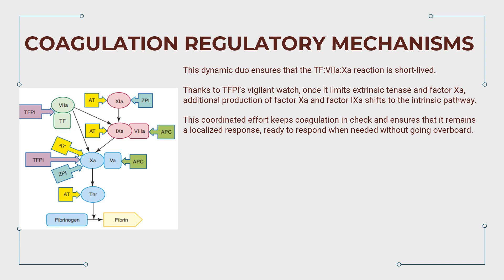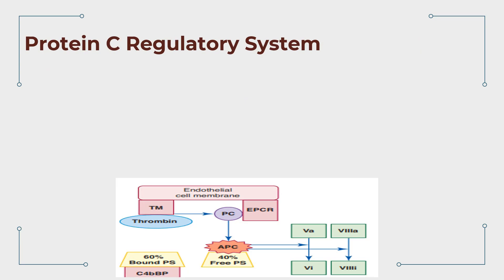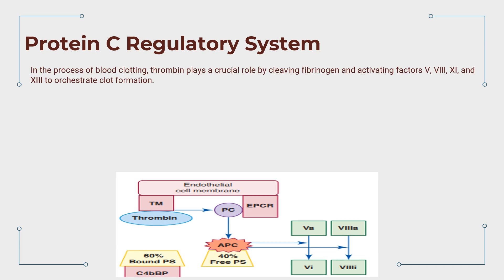In the world of coagulation, it's these unsung heroes and their seamless teamwork that keep our circulatory system in balance, ensuring that clotting and bleeding play their parts perfectly. Next, we're delving into the world of protein C, a master regulator in the intricate dance of coagulation. Thrombin is a central figure — it orchestrates the formation of the clot.